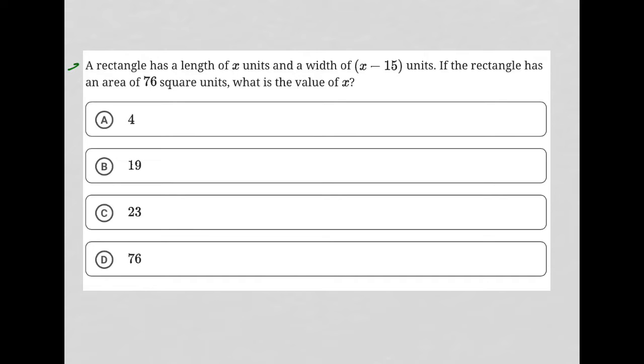So this question says a rectangle has a length of x units. Let me just draw this. I'm going to use the strategy plug-in picture. So I use this strategy anytime a question describes something that can be drawn. So there's my rectangle. My length is x, so I'll just label the lengths there as x.